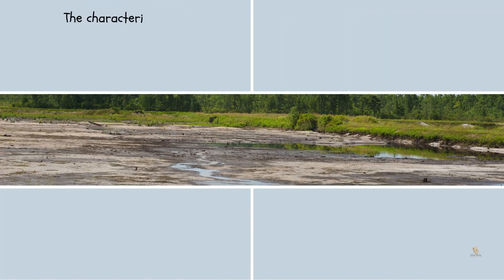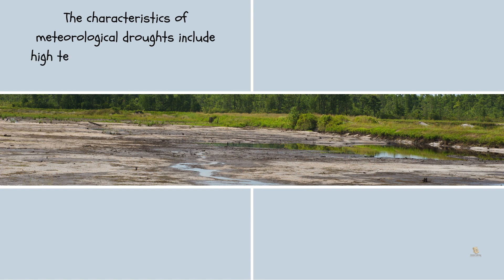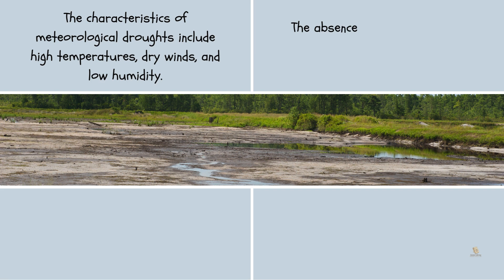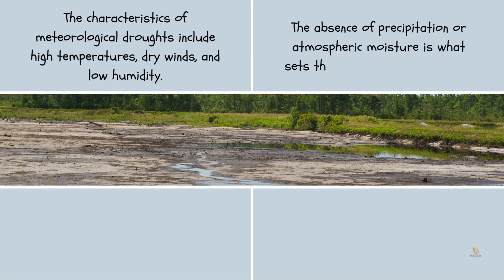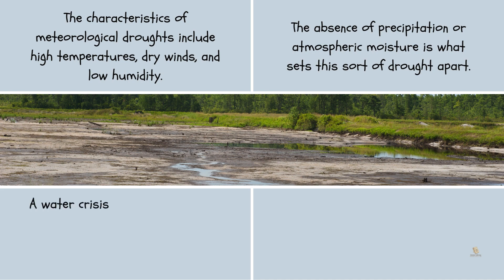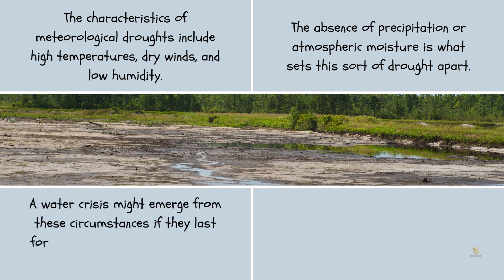The characteristics of meteorological droughts include high temperatures, dry winds, and low humidity. The absence of precipitation or atmospheric moisture is what sets this sort of drought apart. A water crisis might emerge from these circumstances if they last for a long time, but they can also happen fast.